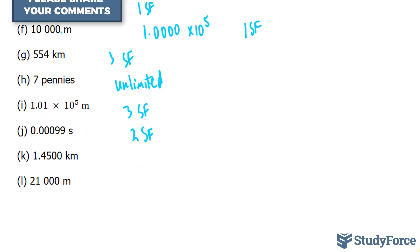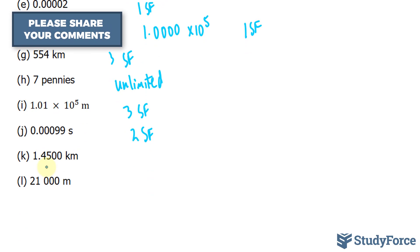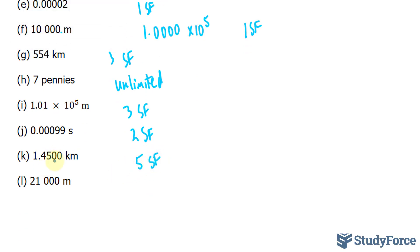In question K, 1.4500, all five of these numbers are significant. These zeros are significant because if they were not significant, they wouldn't be written. So those zeros are part of the measurement.